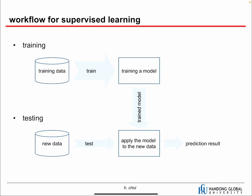For supervised learning there is a standard workflow. For training, we use training data to train the model — we train the model and now we have a trained model. For testing, we apply a new data point to the trained model and get a prediction result, which could be classification or regression. We follow the same workflow: train, then apply the trained model to test data.